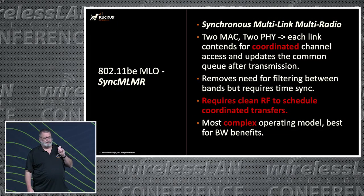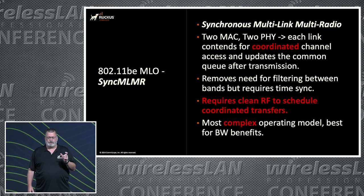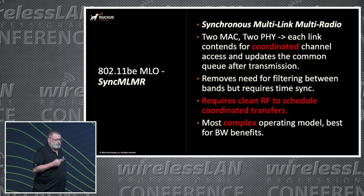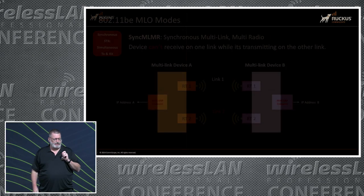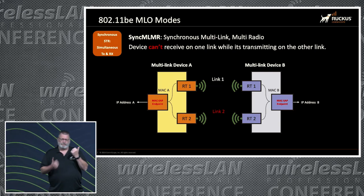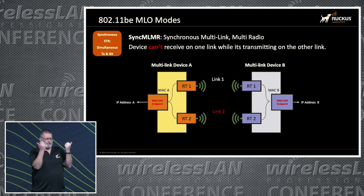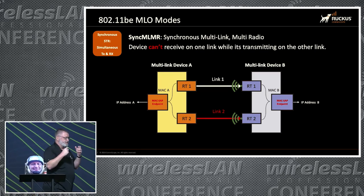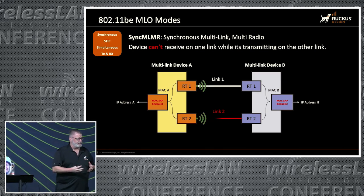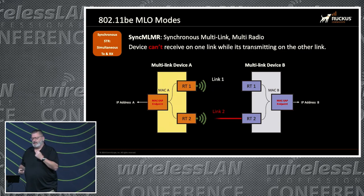So synchronous multi-link multi-radio relies on coordinated contention — both radios have to get channel access at the same time. We don't need the filtering, but you need really clean RF and it's super complex. How often do you think this is going to happen? It's like a back-to-back point-to-point link where it has to coordinate when it's sending the transmit frame so it doesn't interfere with each other. Because of the coordinated channel access, we're probably not going to see this one.